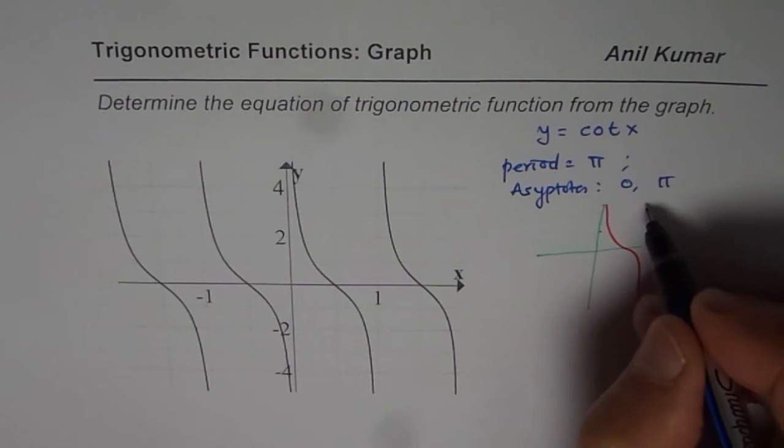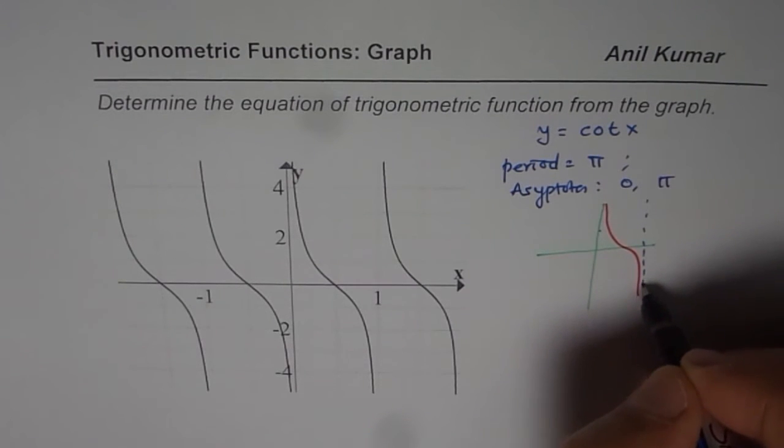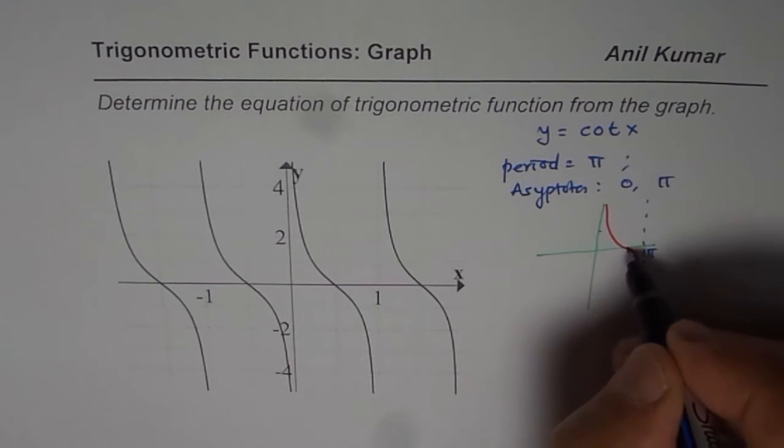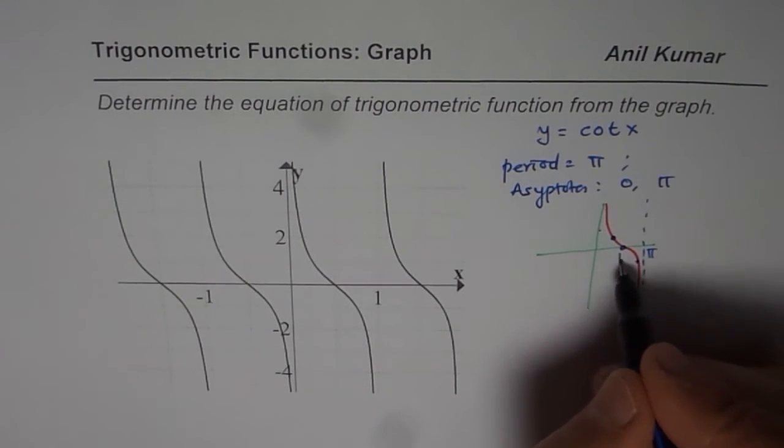Where the vertical asymptotes are at the origin and at π, okay? Now these are critical points to consider.